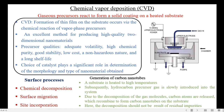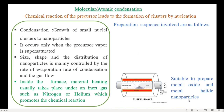Let us see an example of generation of carbon nanotubes by CVD. Initially, a substrate is heated to high temperatures. Subsequently, a hydrocarbon precursor gas is slowly introduced into the system. Due to the decomposition of the gas molecules, carbon atoms are released, which recombine to form carbon nanotubes on the substrate. The decomposition should not be a result of residual impurities.